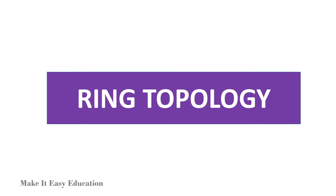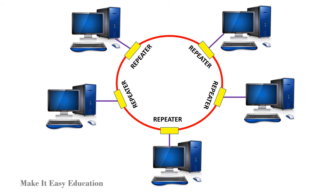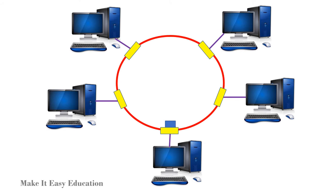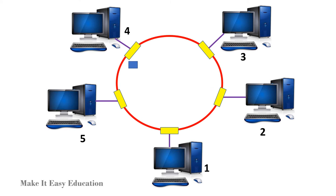Ring topology. In ring topology, each device is connected with the two devices on either side of it. This structure forms a ring, thus it is known as ring topology. Each device in ring topology has a repeater. If a device wants to send data to another device, it sends the data in one direction. For example, if device 1 wants to send data to device 5, it first sends the data to device 2. If the received data is intended for another device, the repeater forwards this data until device 5 receives it.